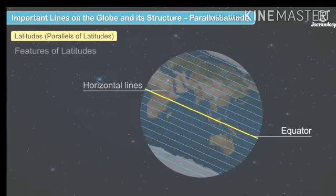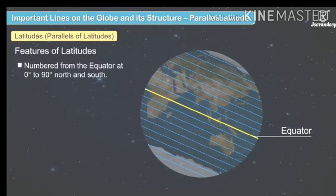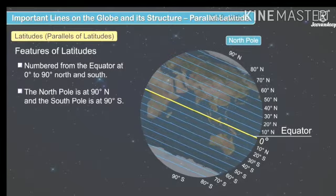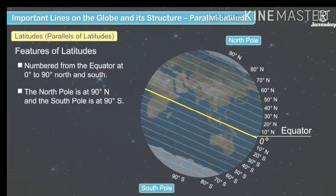The latitudes are numbered. At the equator, it is zero degrees. As it moves towards the north, the degree increases — 10 degrees North, 20 degrees North, and so on — up to 90 degrees North at the North Pole. The letter 'N' is written because these parallels lie in the Northern Hemisphere.